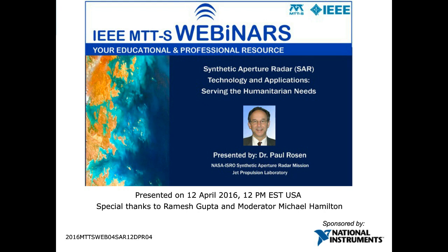Now let's introduce our speaker. Dr. Paul Rosen is lead project scientist of the ISRO NASA Synthetic Aperture Radar Mission at Jet Propulsion Laboratory in the USA. He's also principal investigator and co-investigator on several scientific computing tasks funded by NASA. Prior to this, he was manager of the Radar Science and Engineering Section, a group of nearly 130 scientists and engineers defining, designing, and building state-of-the-art instruments for NASA's Earth and Planetary Science missions.